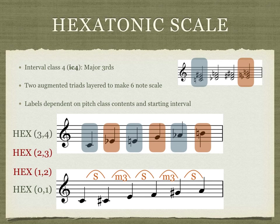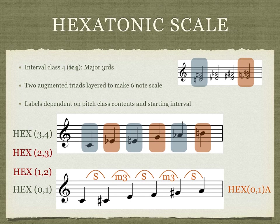Lastly, we need to discern whether the hexatonic scale begins on a semitone and label it with an A — as in our bottom example, hexatonic 0-1-A. Or if it begins with a minor third, we use the label B — as in the top example, hexatonic 3-4-B. Here's a clip of these two scales so you can hear what they sound like.